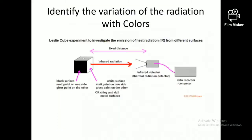In another experiment, we identify the variation of radiation with different colors. We take a metal box and color its surfaces with different colors — black, white, gray, and other colors. We fill the box with a liquid of known temperature, and keep a thermocouple or infrared radiation detector at a certain distance to measure the readings for all surfaces.